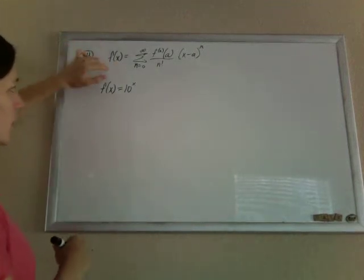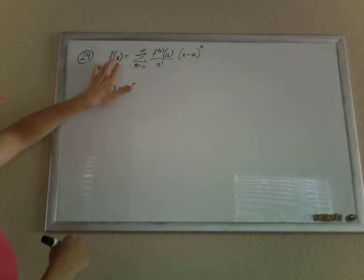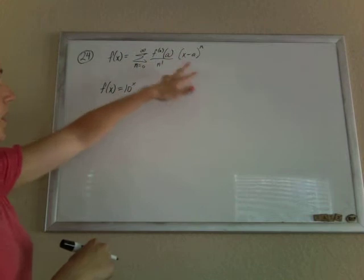Taylor's series says that we can approximate any function, we can write any function as the sum of that mess.